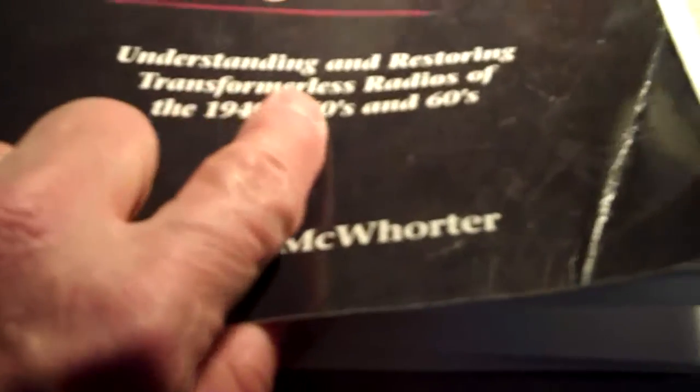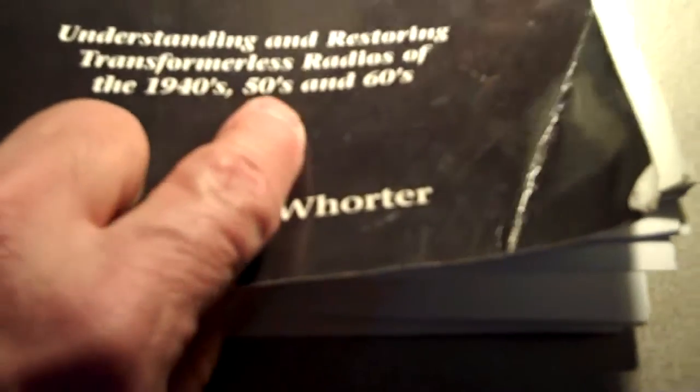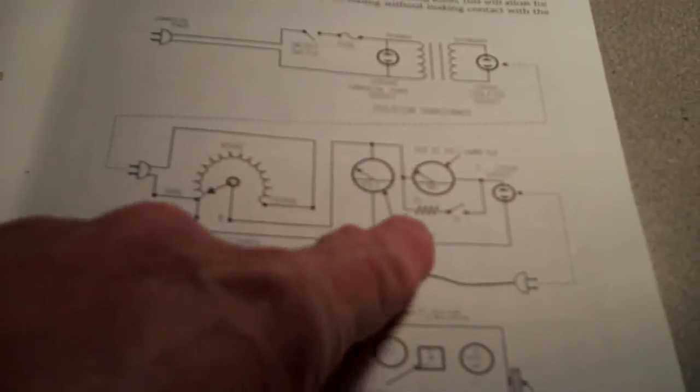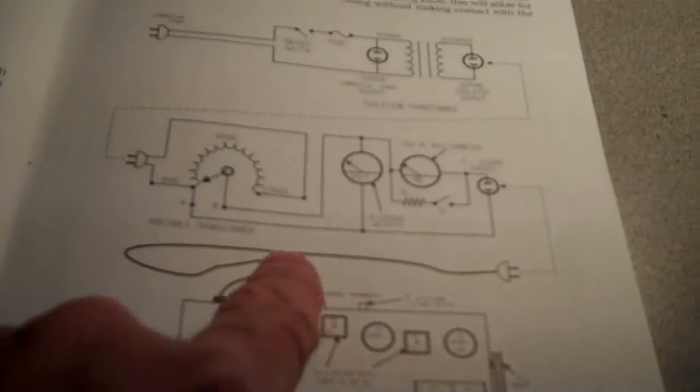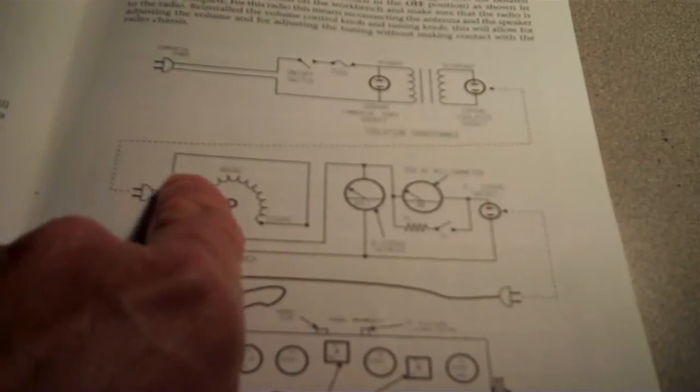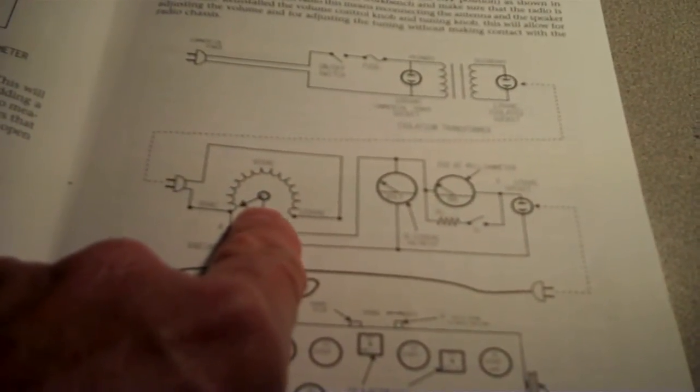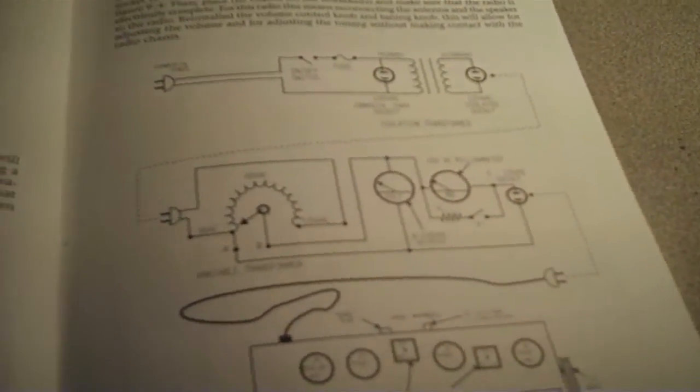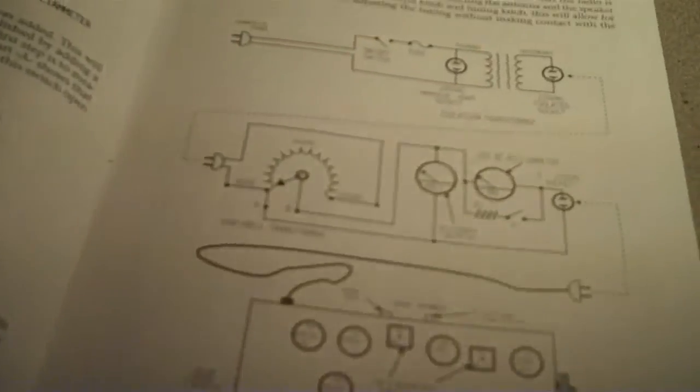Incidentally, in Rick McWhorter's book, The All-American 5 Radio, which is Understanding and Restoring Transformerless Radios of the 1940s, 50s, and 60s - Rick is All-American 5 Radio, most of you know him on YouTube by that handle - page 77 shows all of this hookup that I just showed you. There's the chassis and how it plugs into the socket, how the voltage is all controlled by the variac. His is a wall mounted variac, a little bit different than mine, except that it's horizontal and mine's vertical. And I advise you to go ahead and pick up a copy of his book. You can even find him on eBay.